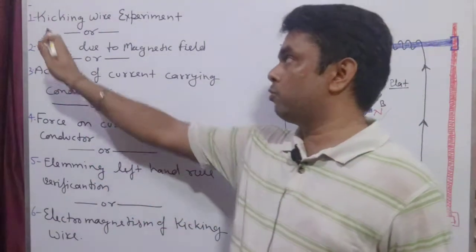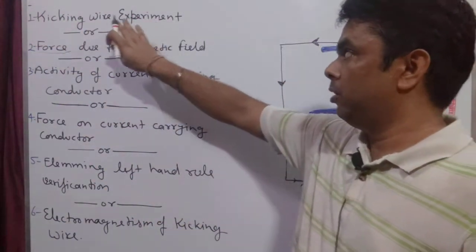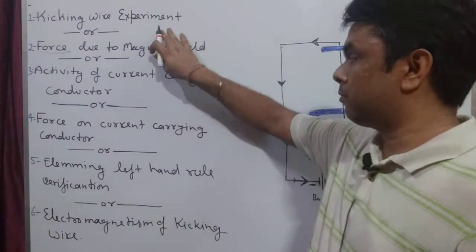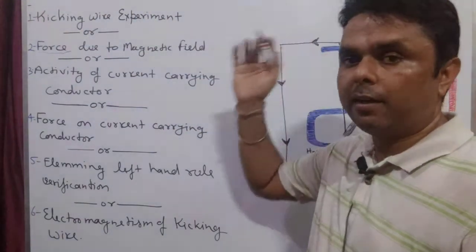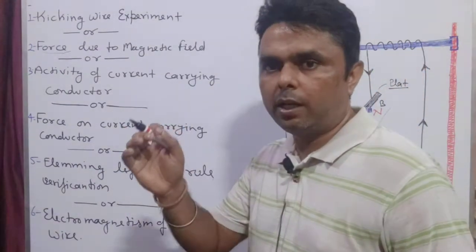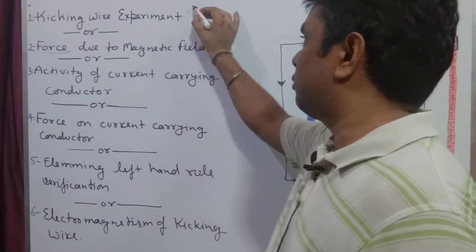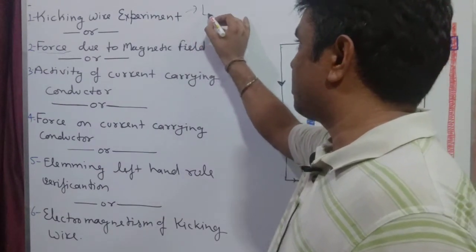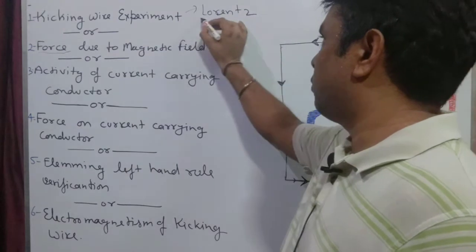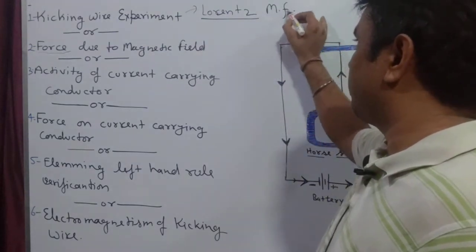Kicking means: there is a wire, and an experiment. When current flows through a wire, there will be a force — a push — which is the kicking force. The scientist has given it the name Lorentz magnetic force. We know the Lorentz magnetic force.